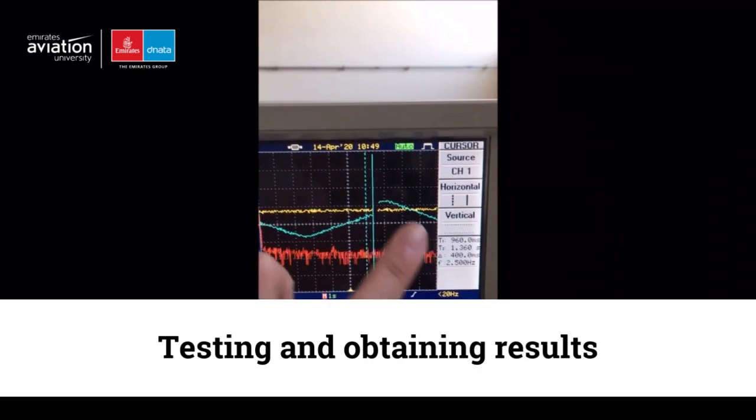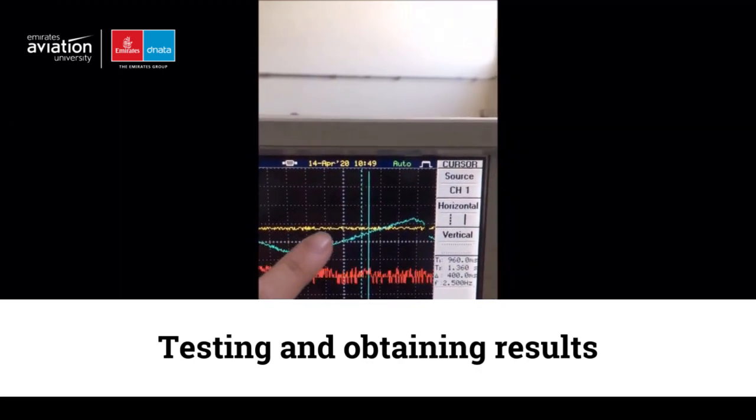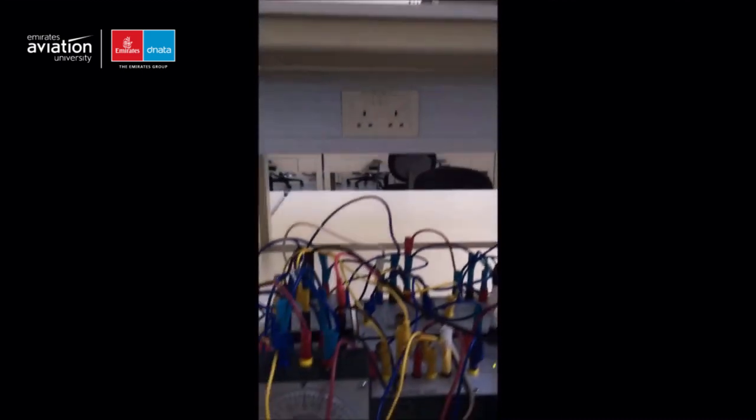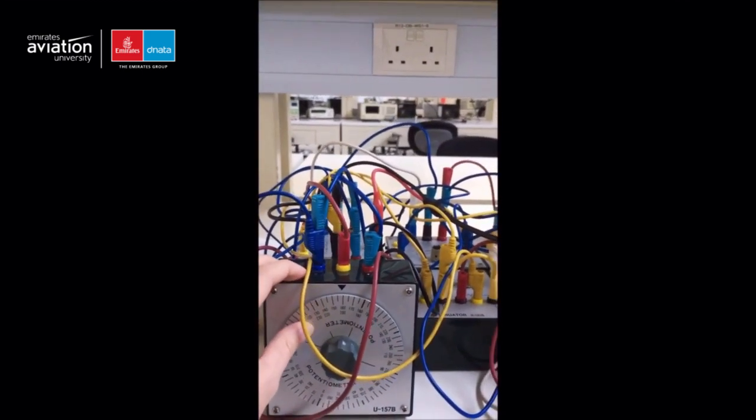The blue waveform is the ramp input and the output is the yellow waveform. Now if I move this clockwise, look, further I increase the more it goes negative.